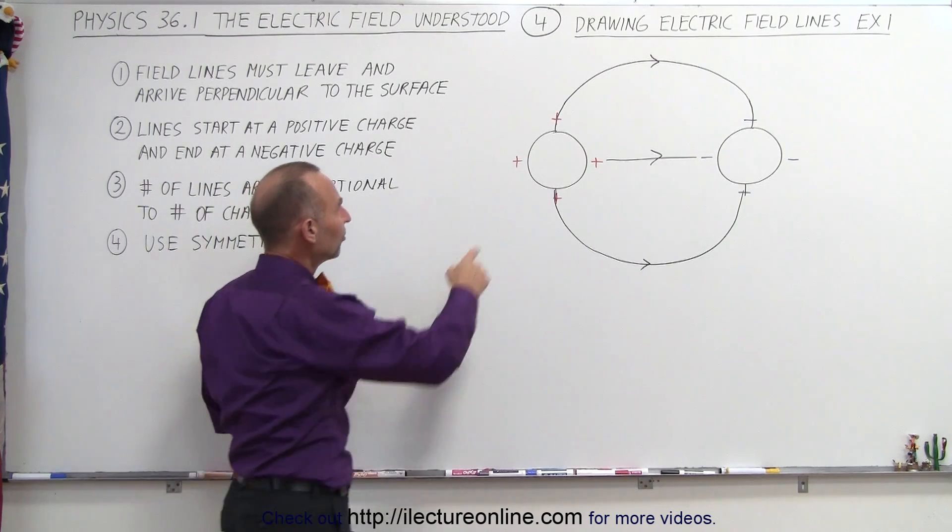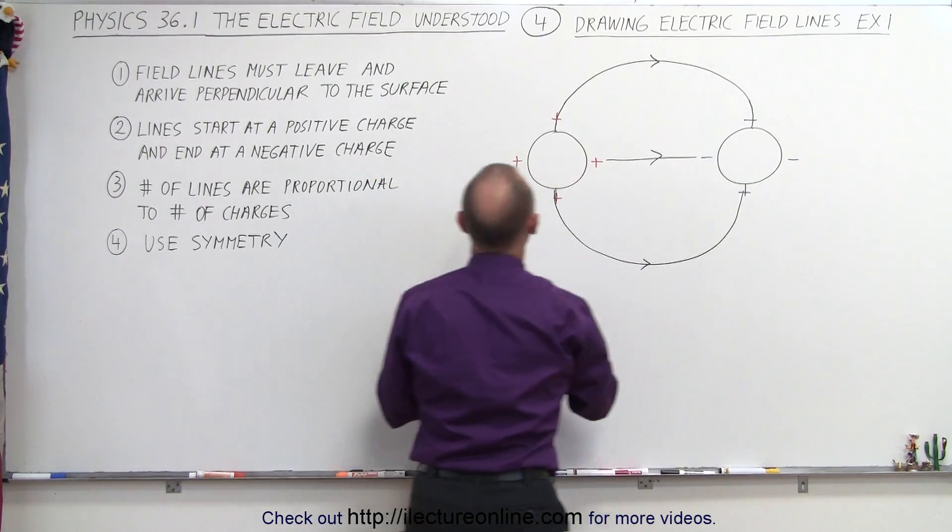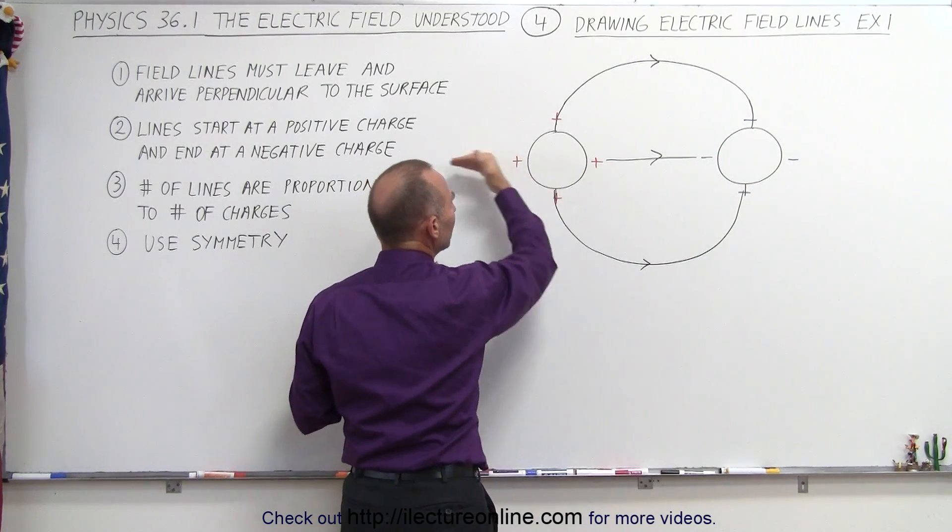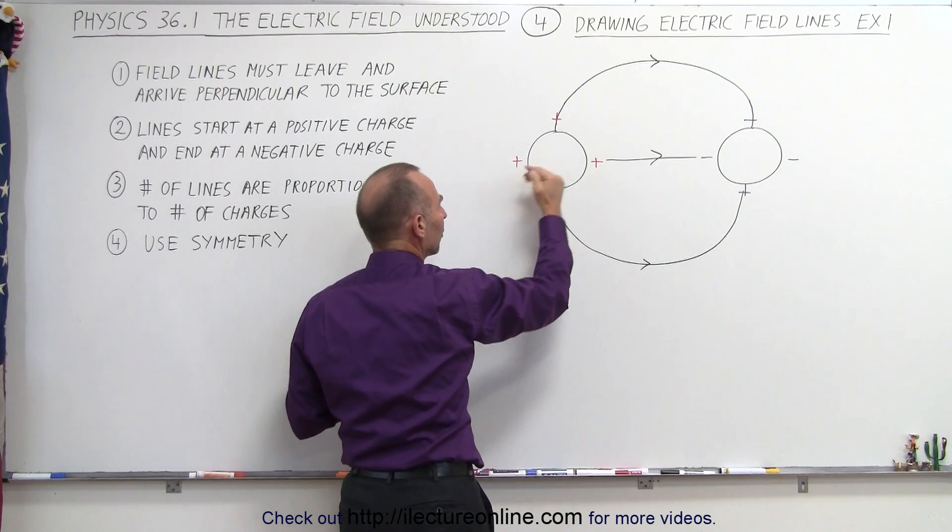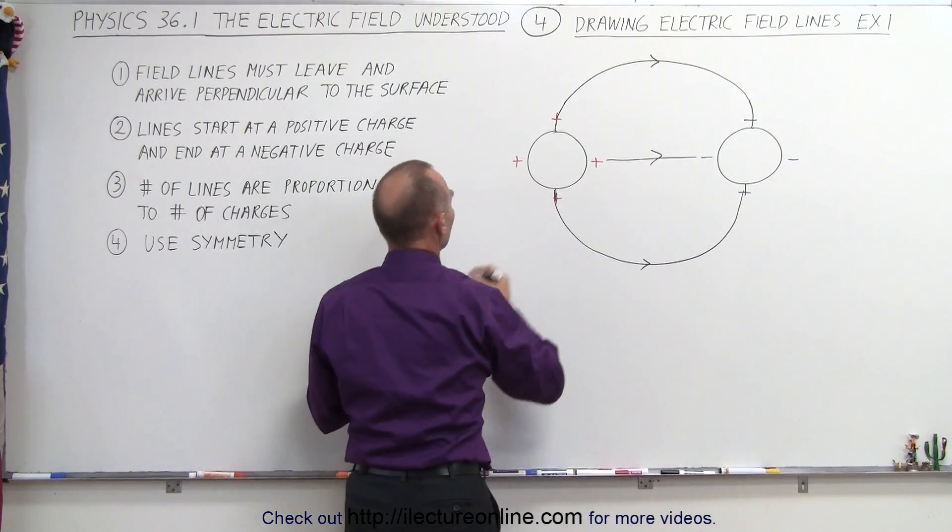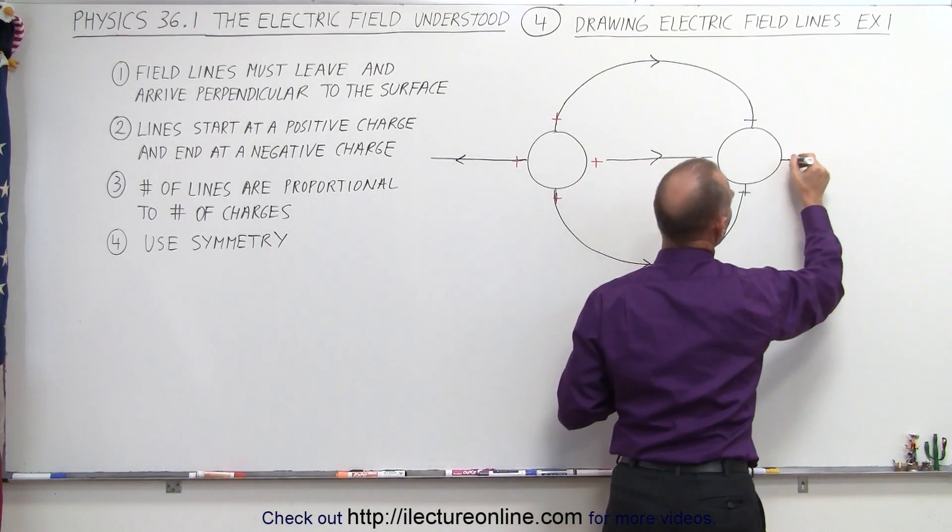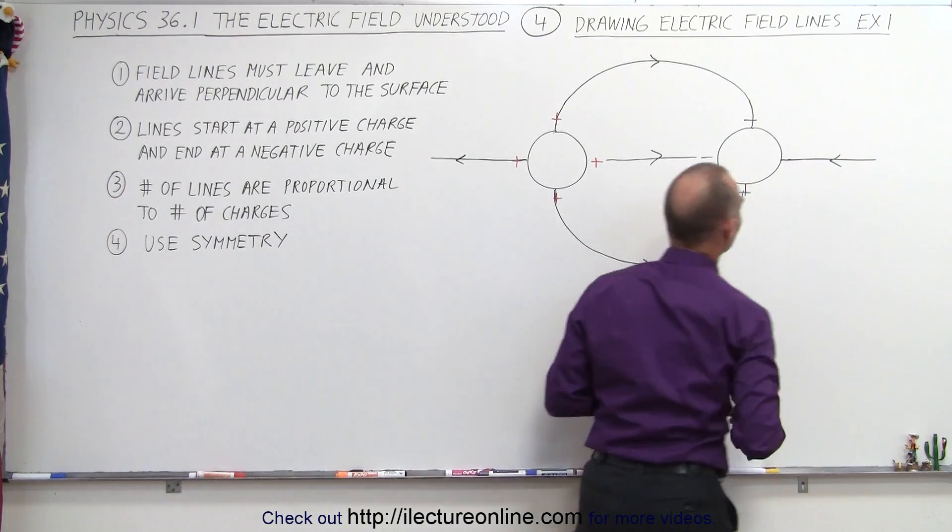Now what do we do with the charge on this side and the charge on this side? Well, since they're completely opposite one another, and we know that the line must move away from positive charge and arrive at a negative charge, then we have no choice but to simply just go straight out this way and to come straight in on this charge right like that.